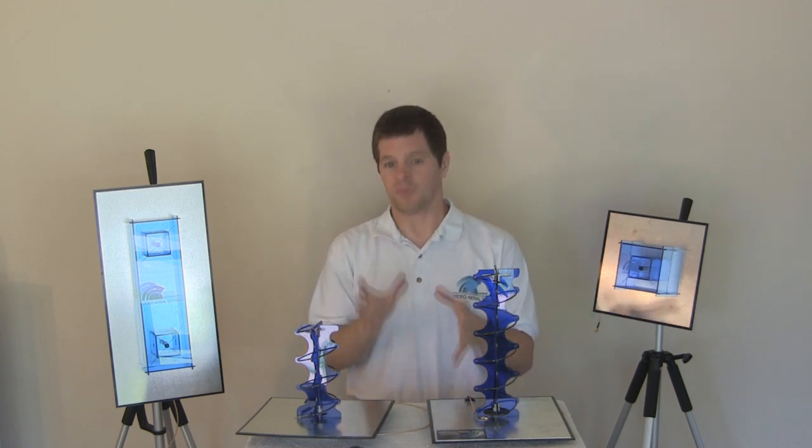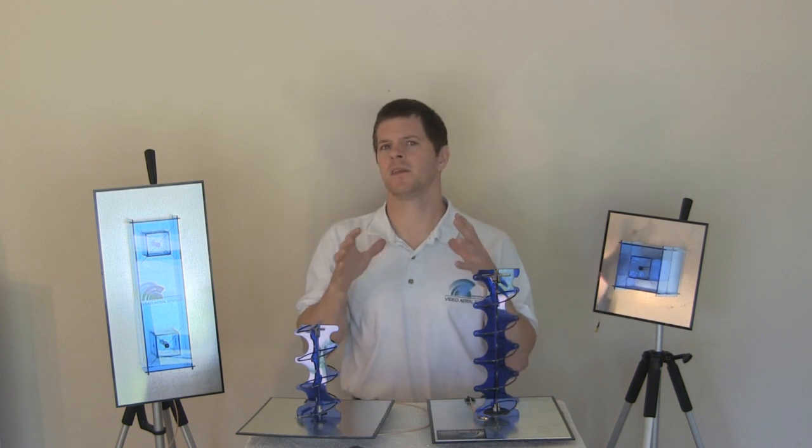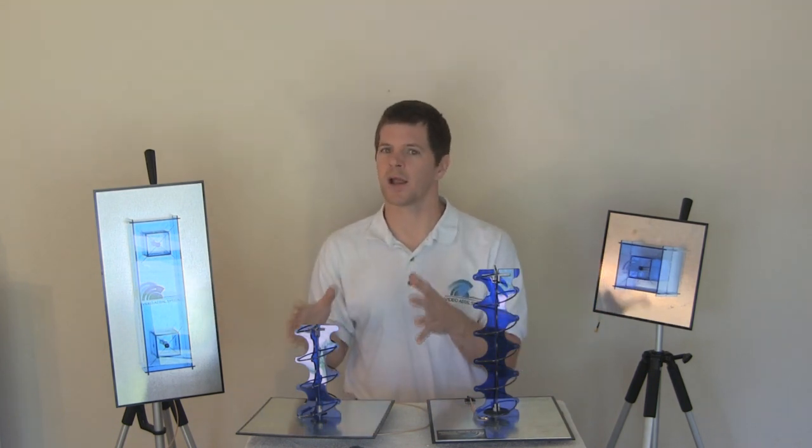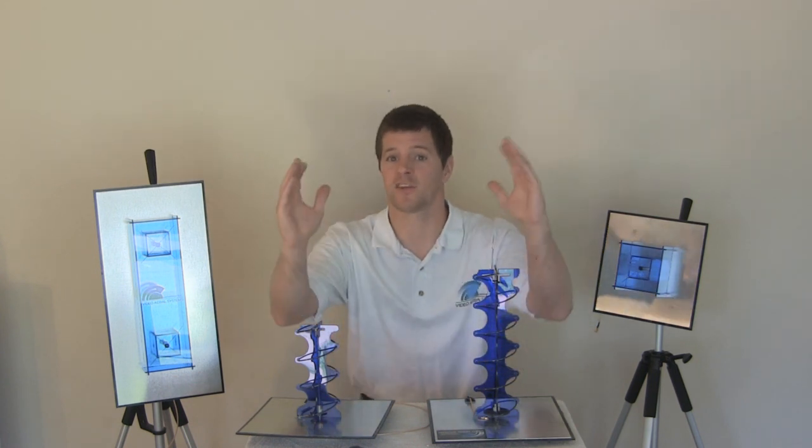The nice thing about a helical antenna is it also has side lobes. Side lobes mean that you can fly around yourself to the sides and to the back, but the distance you can go is not nearly as far as the main beam. Obviously, best coverage is in the main beam.